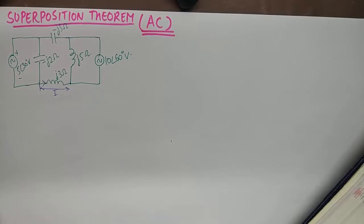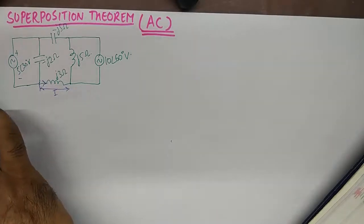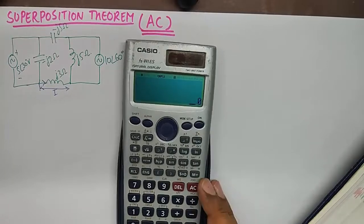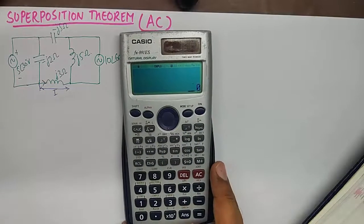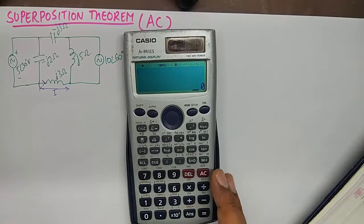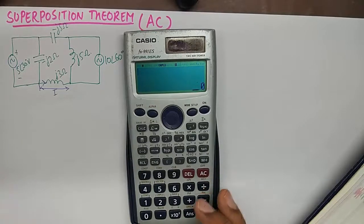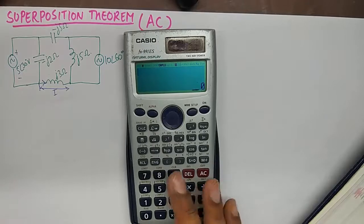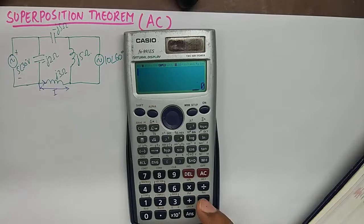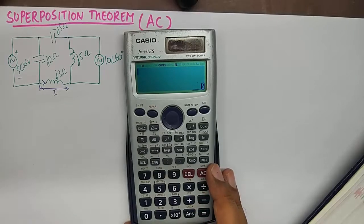Now just like the steps of Superposition Theorem in DC, we'll follow the same steps and will treat the impedances of the branches as resistances of the branches in solving the numerical. And in order to solve complex numbers I'll take help of this calculator 991ES. This is perhaps my favorite calculator in solving complex computations. And I've made a series of videos as to how you can use this calculator to ease your life. I highly recommend that you watch those videos too.